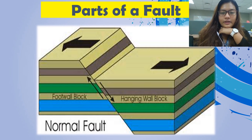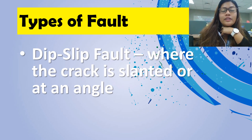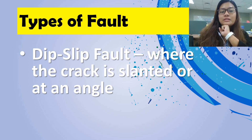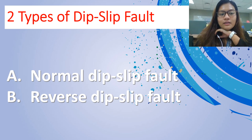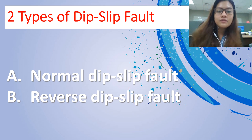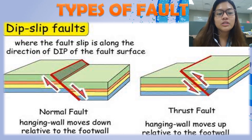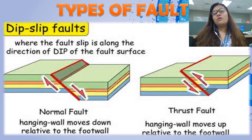Here's a picture of a normal fault. There are three types of fault. First, we tackle the dip-slip fault where the crack is slanted or at an angle. Two types of dip-slip fault are normal dip-slip fault and reverse dip-slip fault. Based on this picture, a reverse fault can also be called a thrust fault.